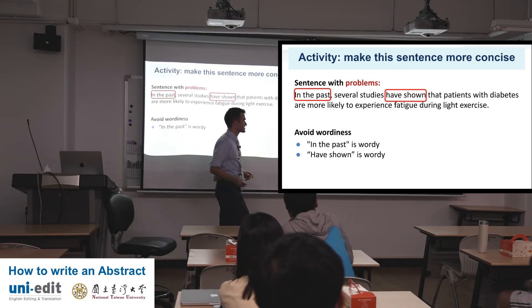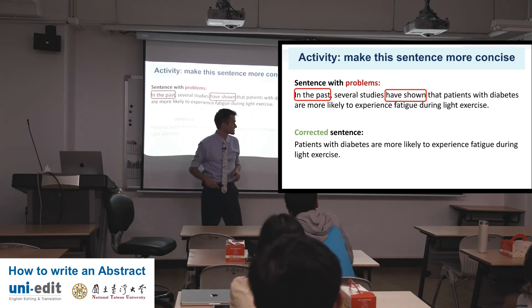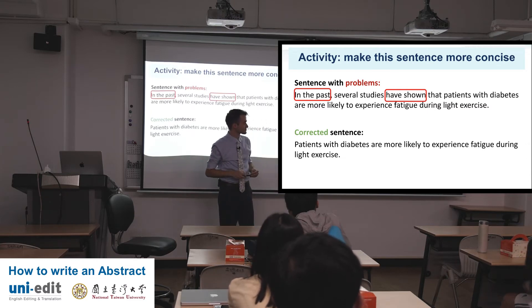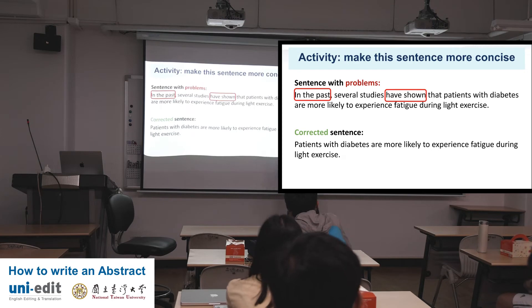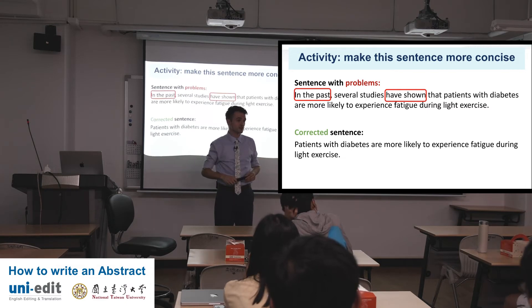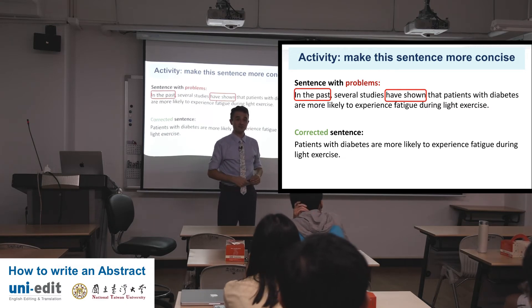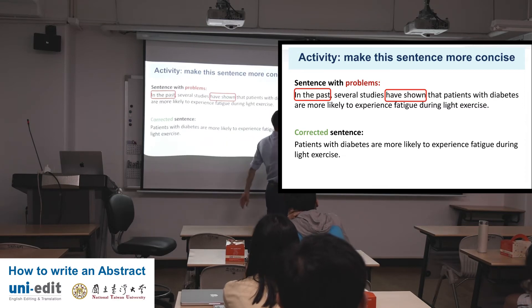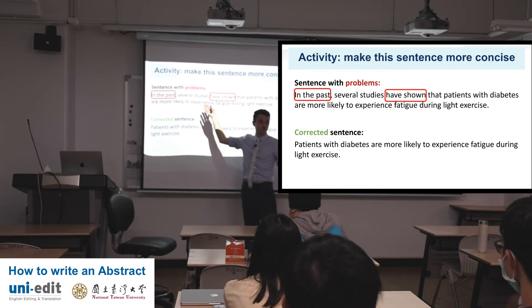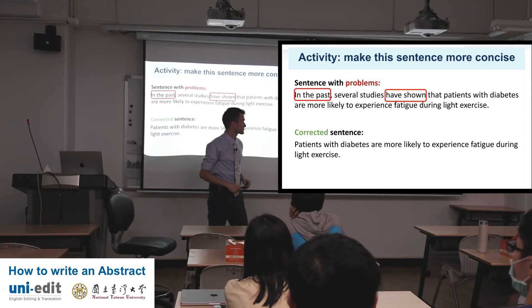The corrected sentence: 'Patients with diabetes are more likely to experience fatigue during light exercise.' We've taken out 'several studies' completely. We assume your academics are publishing papers and you've done the research, you've taken the time to find good studies. So we assume 'several studies have shown' and we've assumed it's in the past — we know that information. Just dive straight into it. We cut out the entire first part of the sentence. The first part is grammatically okay and it sounds academic, but it's just not needed.